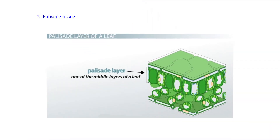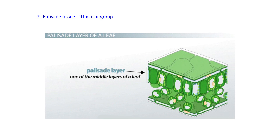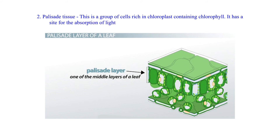2. Palisade Tissue: This is a group of cells rich in chloroplast containing chlorophyll. It has a site for the absorption of light energy and manufacture of food for photosynthesis.